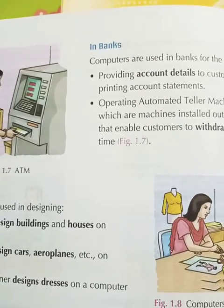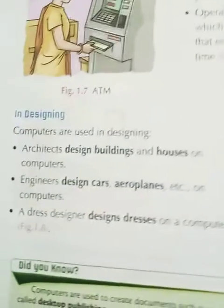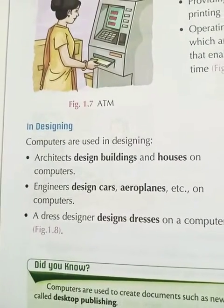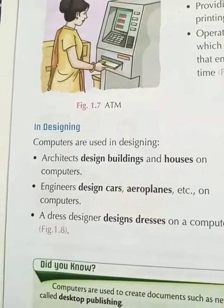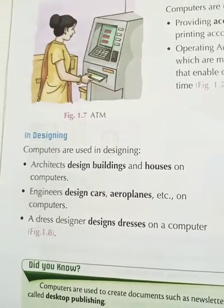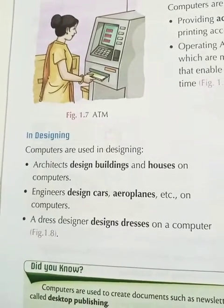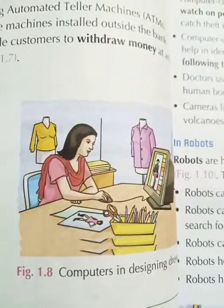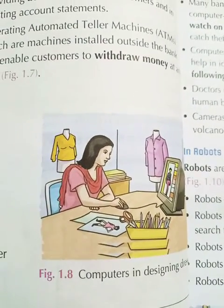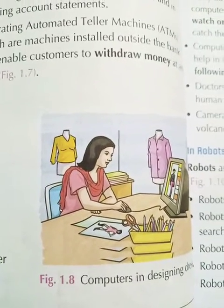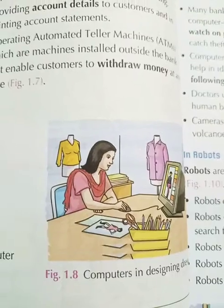The next heading is: in designing. Computers are also used in designing. Architects use computers for building design and house design. Engineers use computers for car designing, aeroplane designing, and designing other tools. Now look at this picture — what do you see? There are dresses. This is a dress designer, so dress designers also use computers for designing clothes.